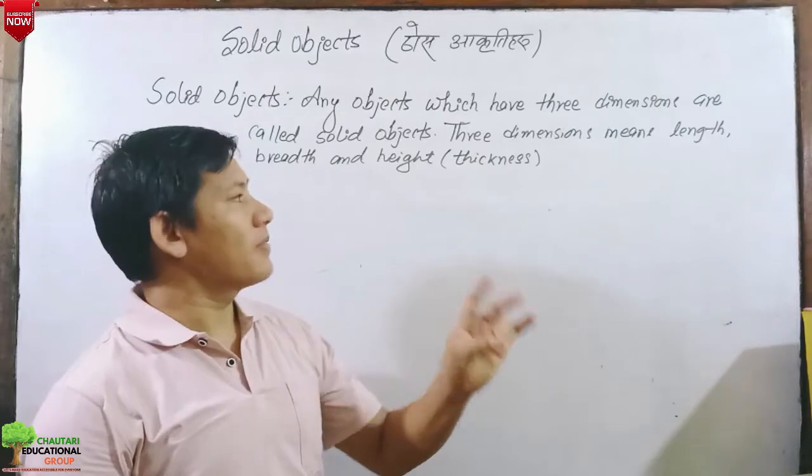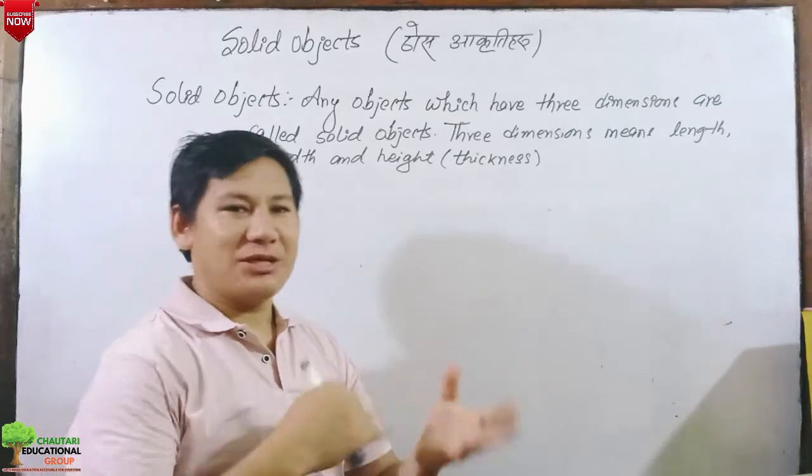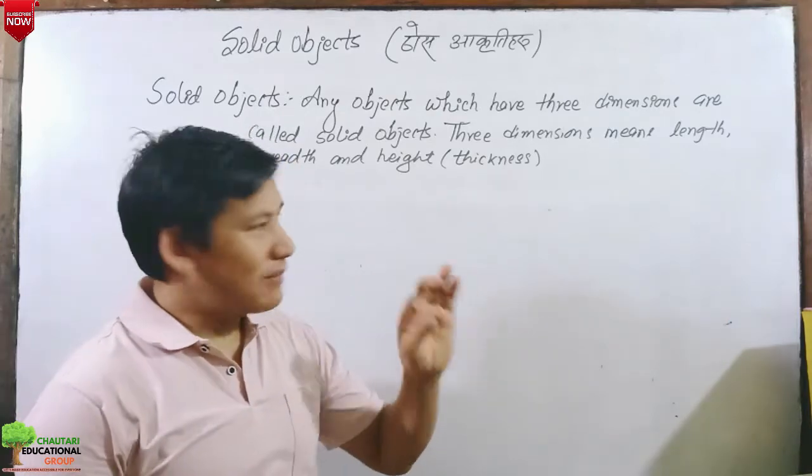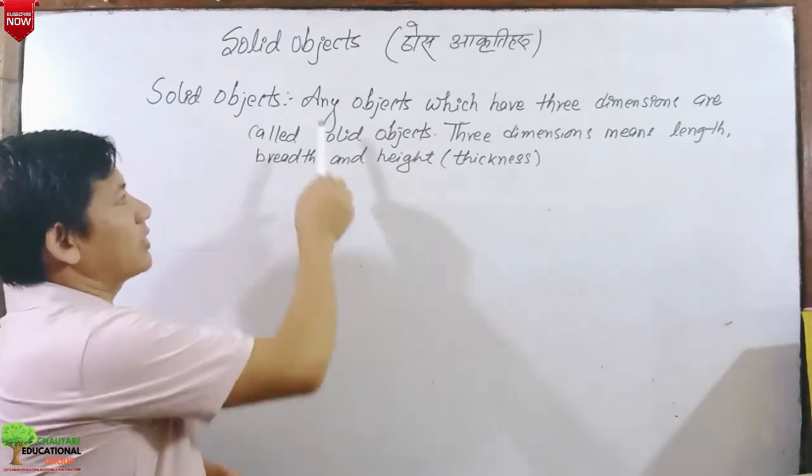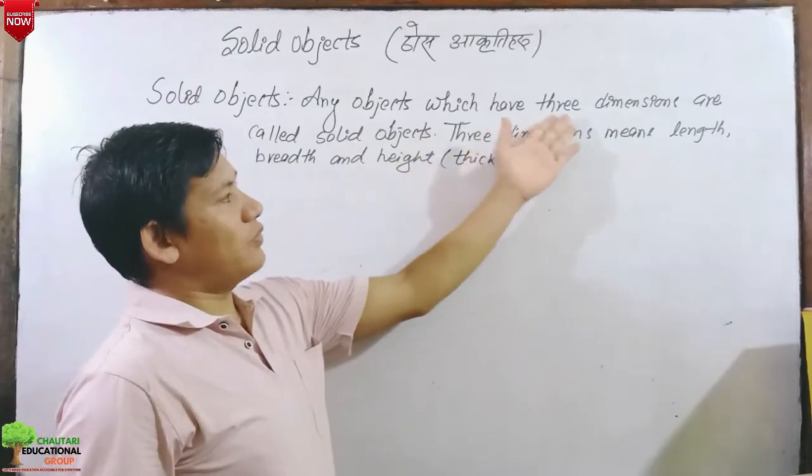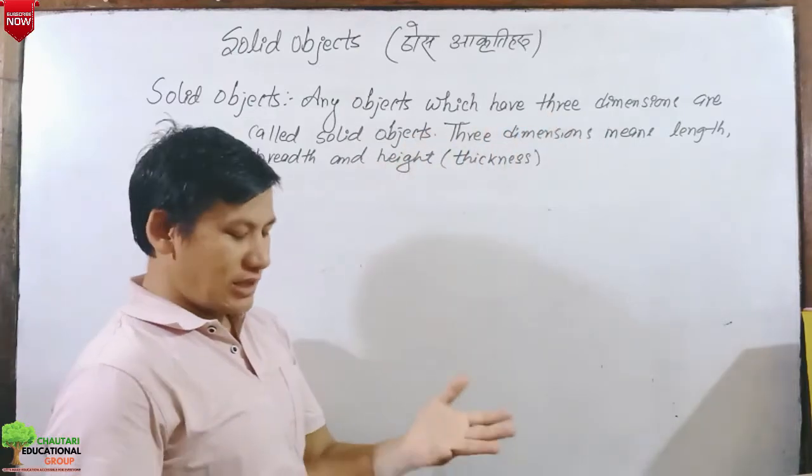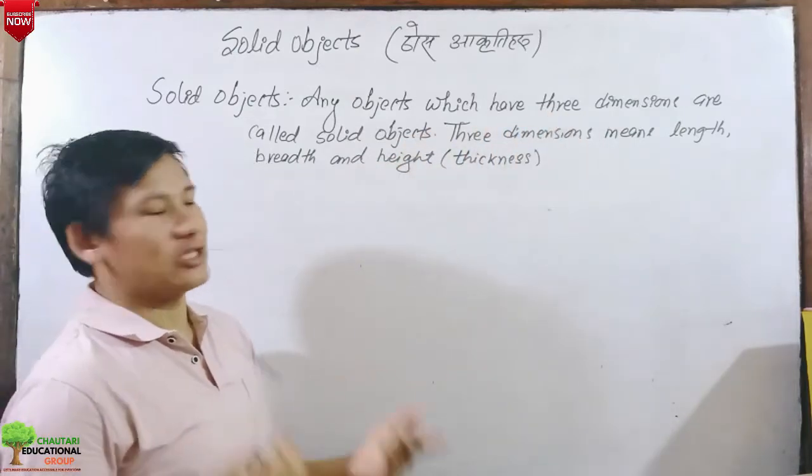Plane figures have length and breadth. Solid objects have three dimensions. Three dimensions means length, breadth and height or thickness.